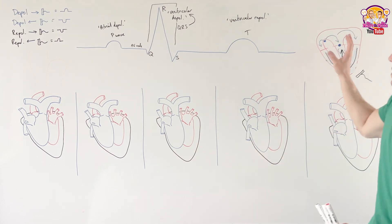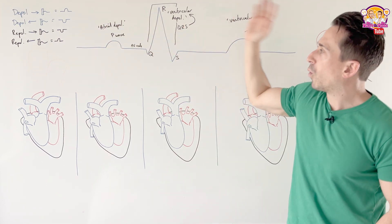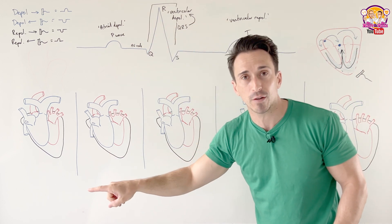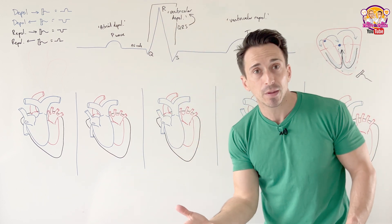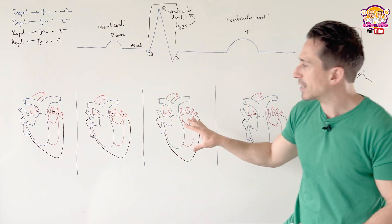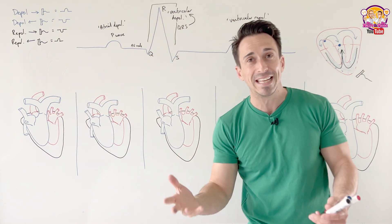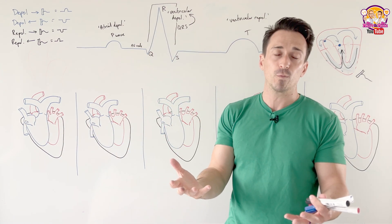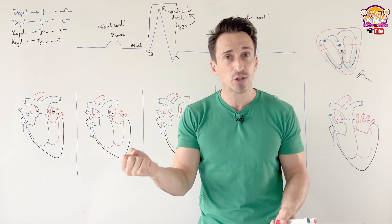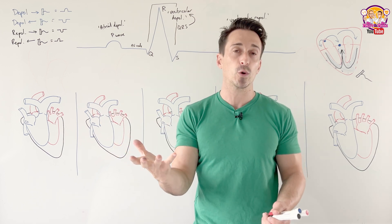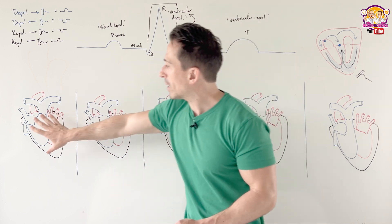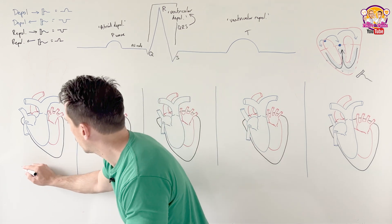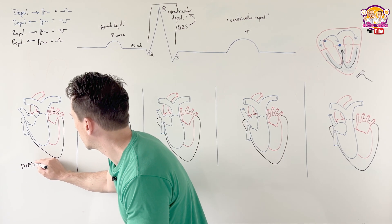Now we've set up our electrical scene. What follows is the mechanical function of the heart — contraction. The heart can either contract, which we call systole, or it can relax, which we call diastole. We're going to start with diastole — relaxation.